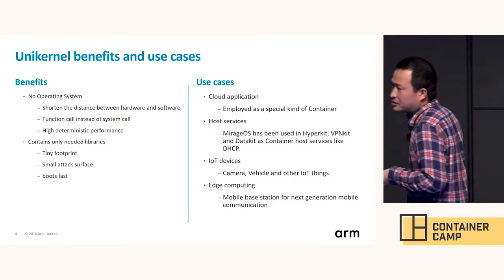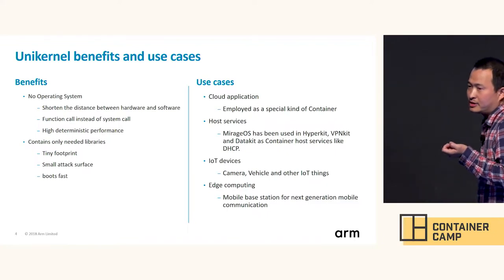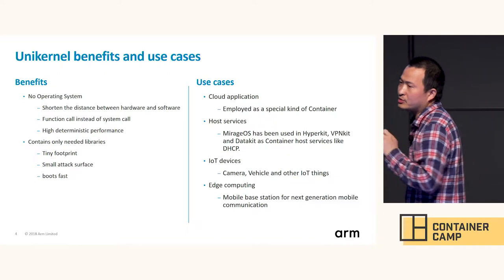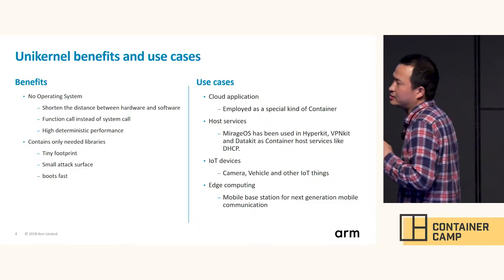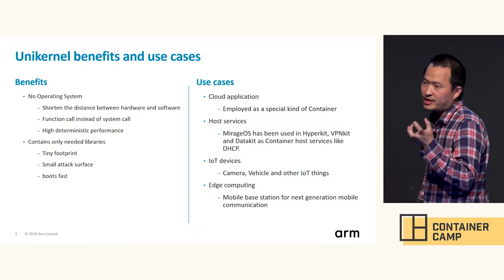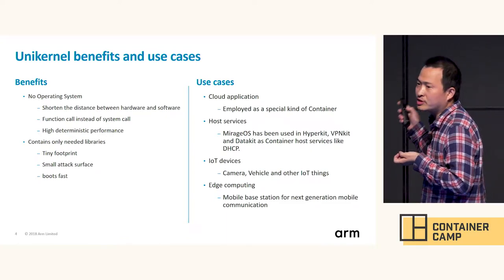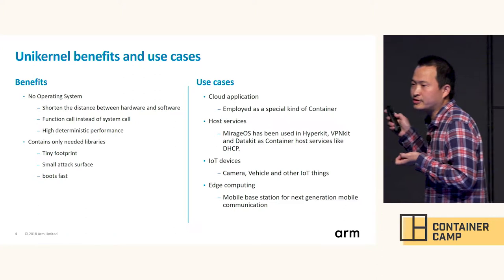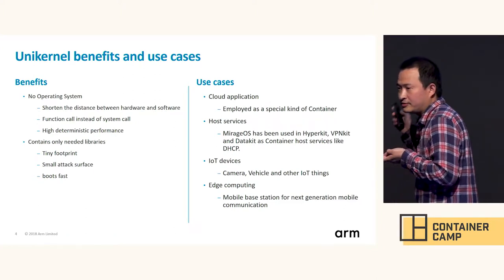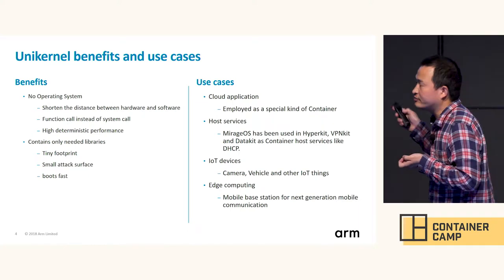The third use case is IoT devices. Cameras, vehicles, and other IoT devices often have very few system resources and limited network bandwidth. UniKernels provide everything needed to deploy software to such devices, so they are ideal for that type of environment.